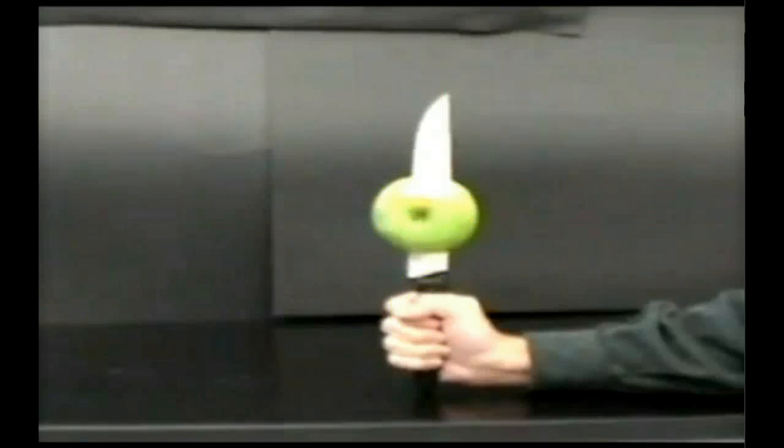When the person got their hand going really fast and then stopped it abruptly on the table by hitting the hilt of the knife on there, the apple had a tendency to keep going. Its inertia would keep it traveling very fast in the same direction, so fast in fact that it overcomes the friction from the knife and slides down the knife, because the apple had a tendency to keep going in the direction it was going.